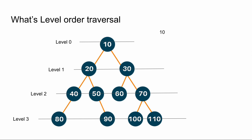What is level order traversal? First of all, what are levels? Levels are actually very intuitive — they're just levels. So if you look at this particular picture, 10 is at level 0, 20 and 30 will be at level 1. Levels are nothing but how far they are from the root node. For example, how far is 10 from the root node? It is 0, so 10 will be at level 0. Similarly, 20 is just 1 edge far from the root node, so the level will be 1.